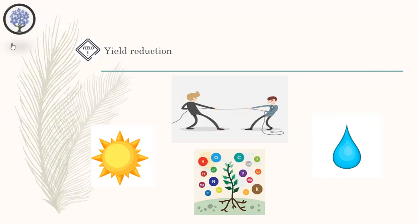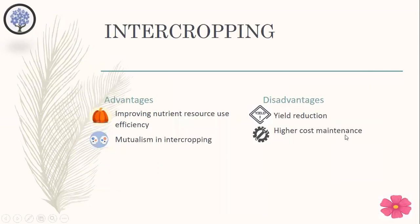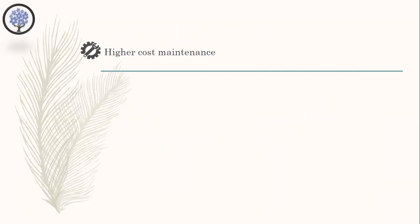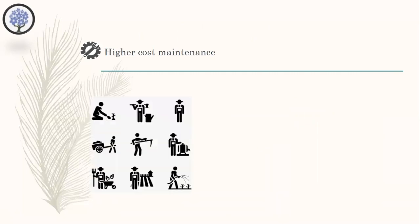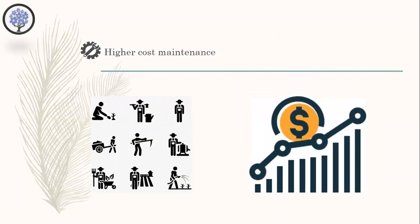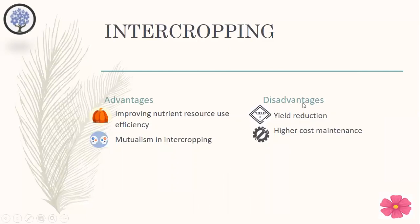The last disadvantage is higher cost maintenance. In particular, weeding may have to be done by hand. This is not a serious problem in countries where farm labor is cheap, like Ethiopia. But for countries lacking such a labor force, intercropping will result in increased costs. These two disadvantages of intercropping were found in the Journal of Biology, Agriculture and Healthcare from Wolato Sodo University.